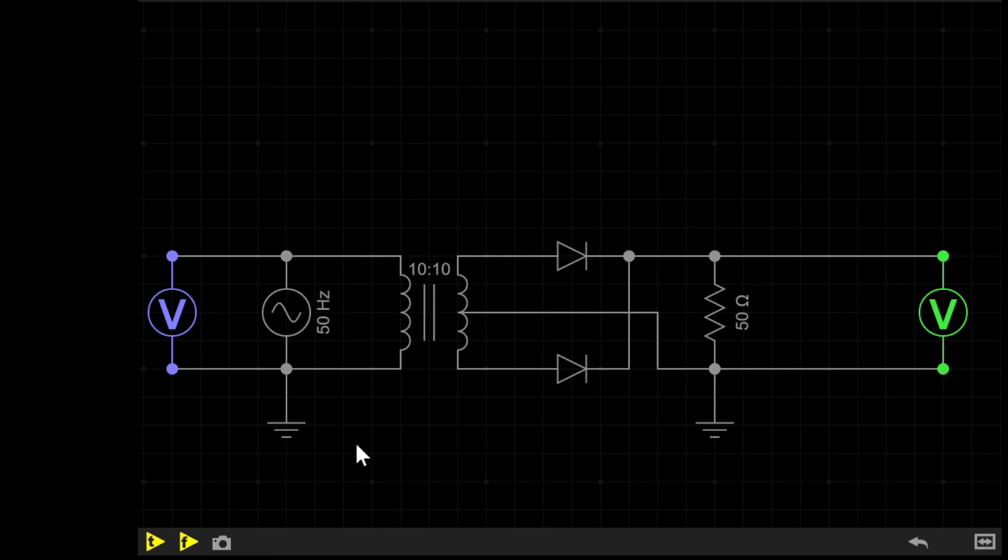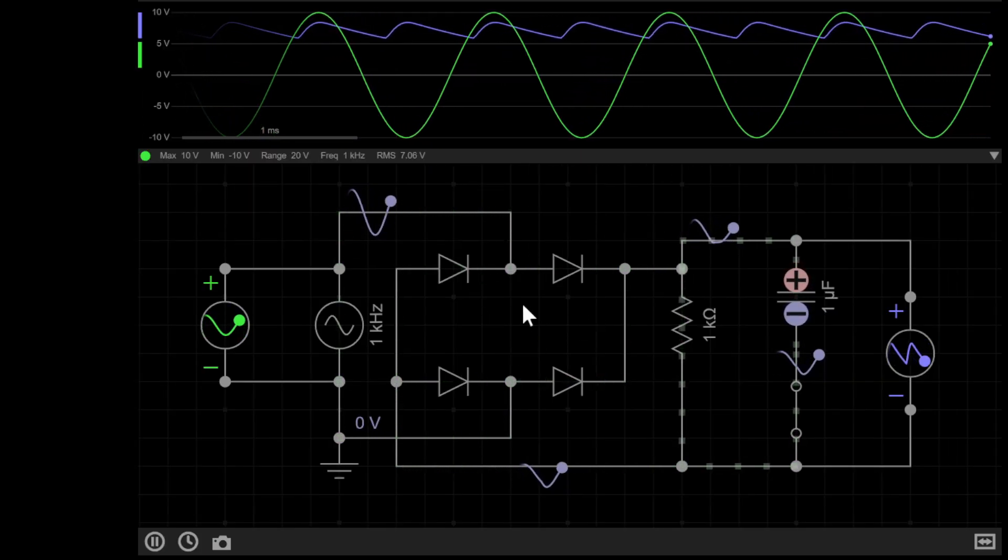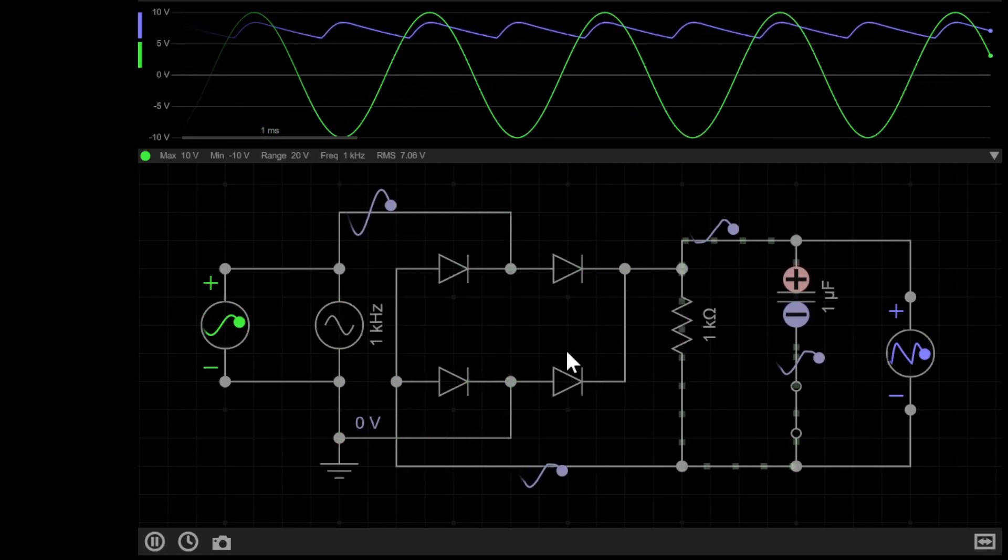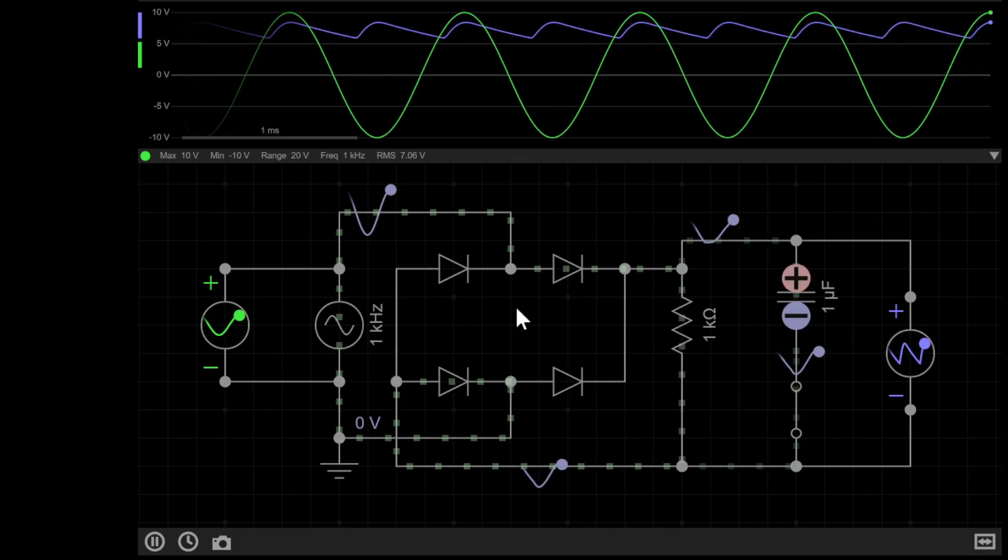This is a simple center tapped full wave rectifier. It only needs the parts we just used as well as two diodes. The advantage of this over traditional full wave rectifiers, like this one, is that they normally need four diodes. There is a link in the description explaining what a diode is as well as a link to this full wave rectifier.